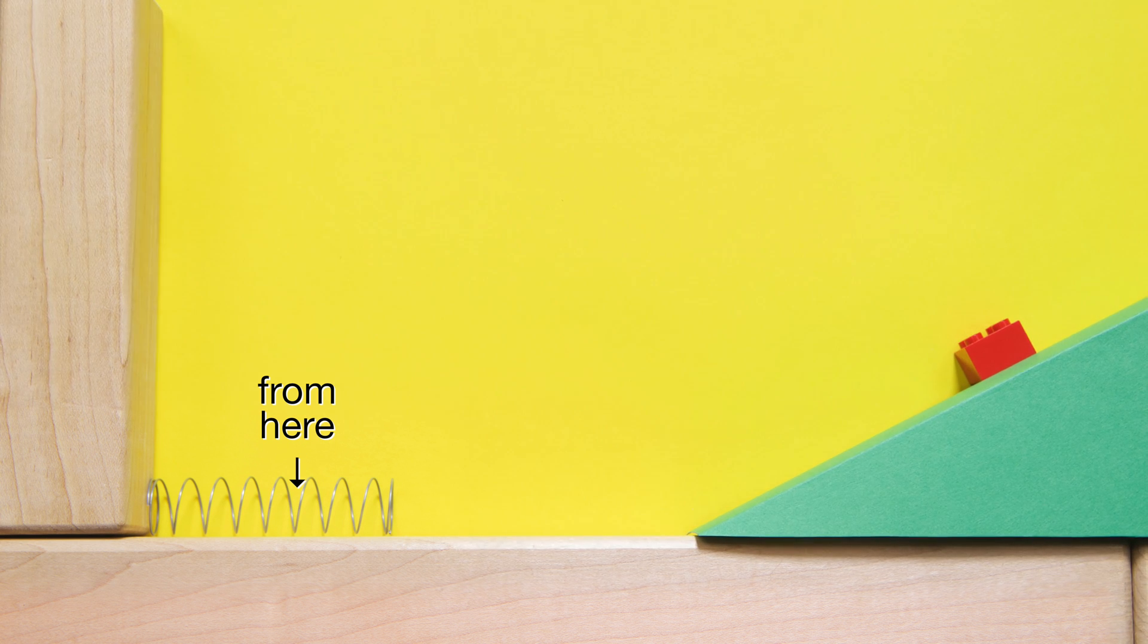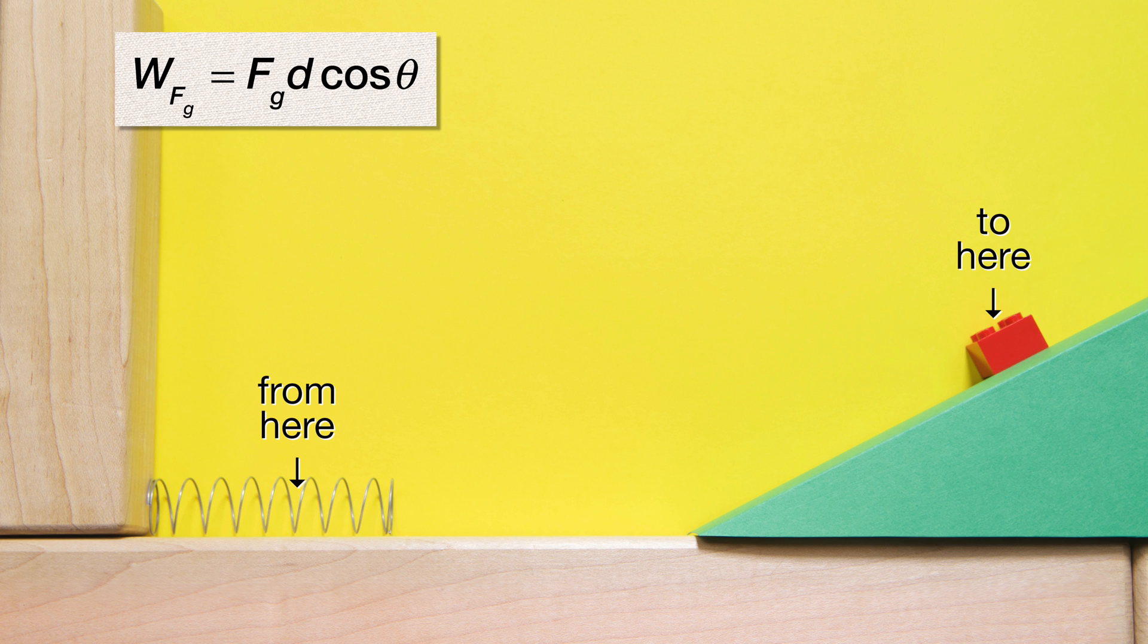The equation for the work done by the force of gravity is the force of gravity times the displacement of the object times the cosine of the angle between the direction of the force and the direction of the displacement.